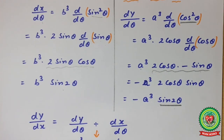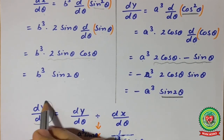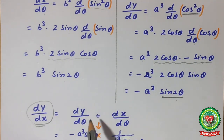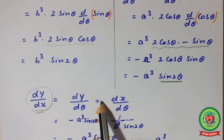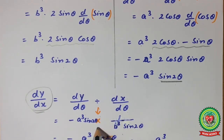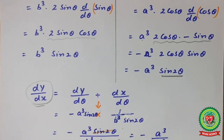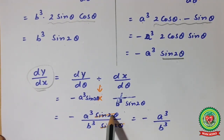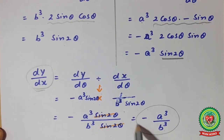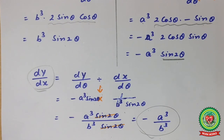Now to find dy/dx, we take dy/dθ as the numerator divided by dx/dθ, converting to multiplication with the reciprocal: (−a³sin2θ) × (1 / b³sin2θ). The sin2θ terms cancel, and the answer is −a³/b³.